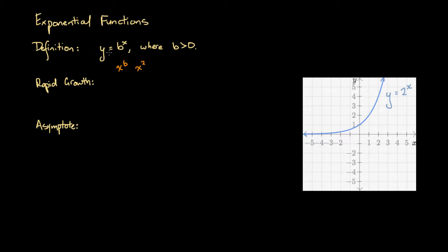We know what x squared looks like — y equals x squared is a quadratic function, so that looks like a parabola. But here instead we've got b to the power of x, where x, which is our independent variable, is actually an index. Or another way of saying it: x, the independent variable, is an exponent, and that's where it gets its name from.